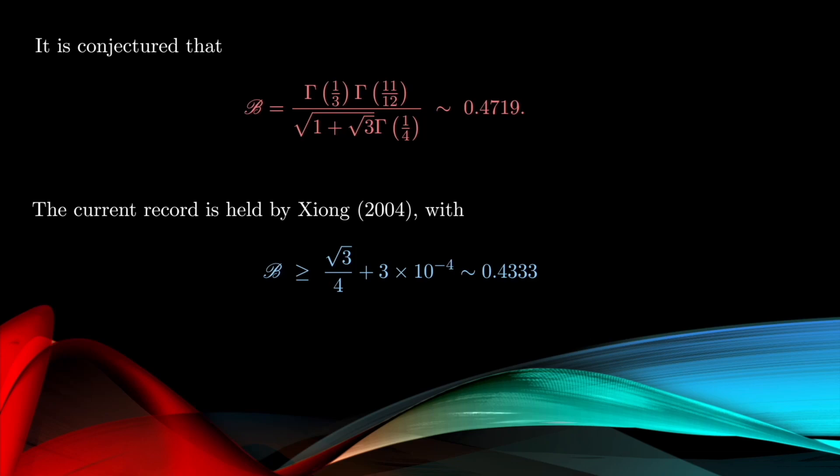And at present, the current record is held by Xiong in 2004. He was able to show that the Bloch constant is bounded below by √3/4 + 3×10^(-4), which is about 0.4333.